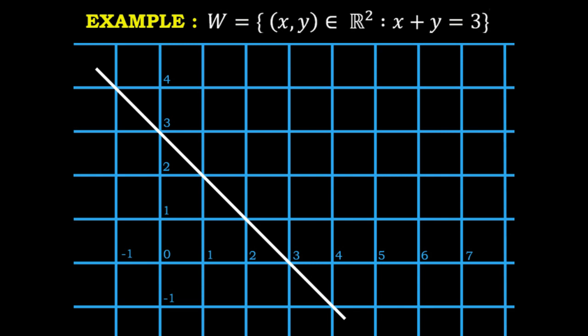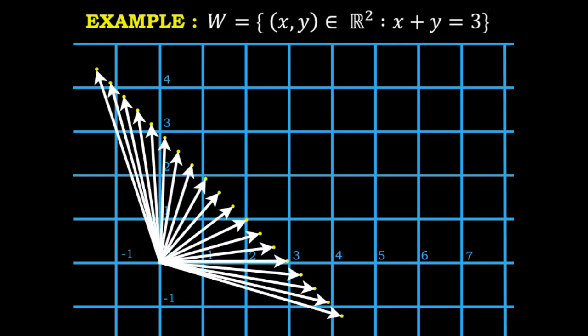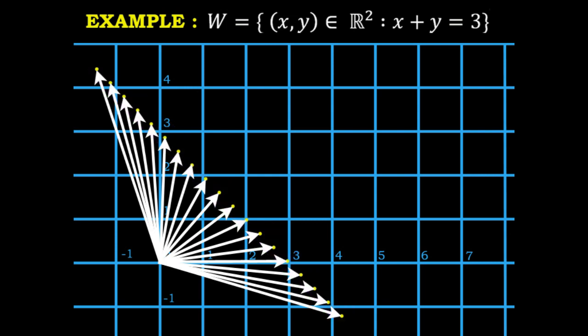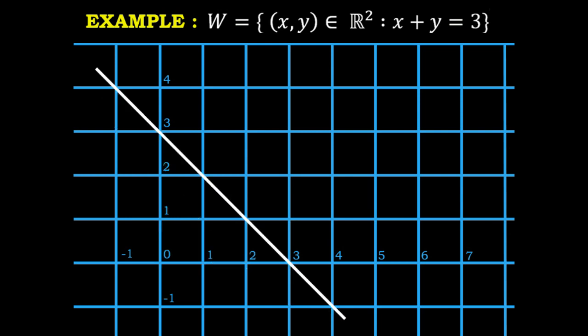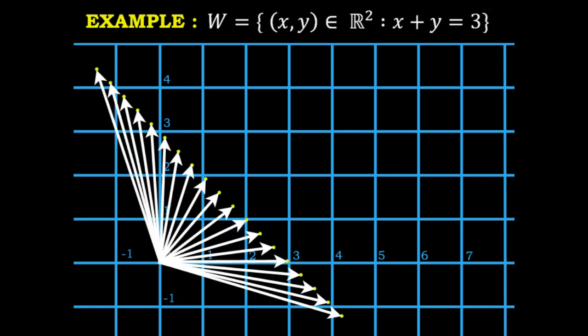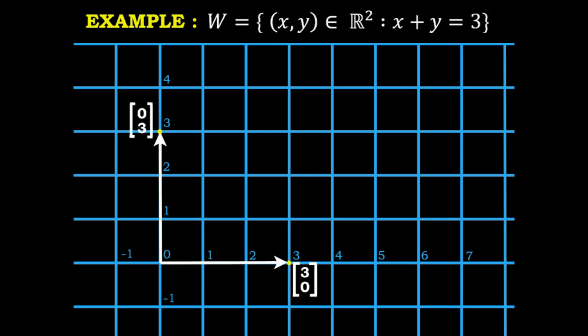This is what the graphical representation of the given set looks like. Every point on this line is a vector. If we replace all these points by pointed arrows with their tails at the origin and the heads at the points on the given line, we end up getting a graphical representation of the vectors that form this line. By joining all these arrowheads we get the graph of the given set. Out of all the vectors that form this line, let's randomly pick any two.